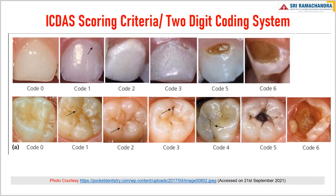These are two rows of pictures representing the pictorial representation of caries in anterior and posterior teeth. Code 0 — sound tooth surface: there should be no evidence of caries, either no or questionable change in the enamel translucency after prolonged air drying of approximately five seconds. Surfaces with developmental defects such as enamel hypoplasia, fluorosis, tooth wear such as attrition, abrasion, erosion, and extrinsic or intrinsic stains will be recorded as sound.